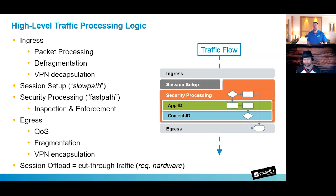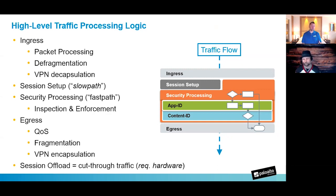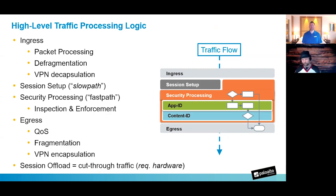One thing we won't cover in detail here is session offload, sometimes called hardware offload. This is where the firewall can take certain traffic not subject to application inspection and send it through the network processor for fast cut-through processing. When doing diagnostic captures, you may want to temporarily turn that feature off so traffic goes through the full series of processes. But session offload is an important performance enhancement and is only available on hardware versions of the firewall — something to adjust only if required during troubleshooting.